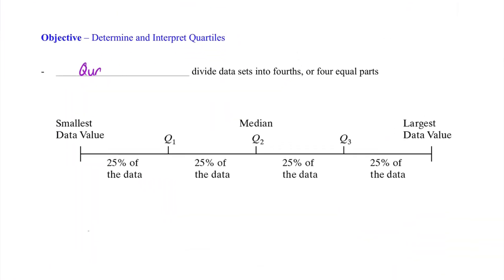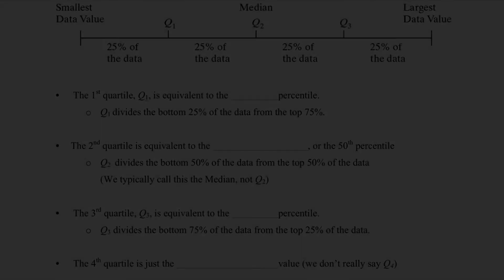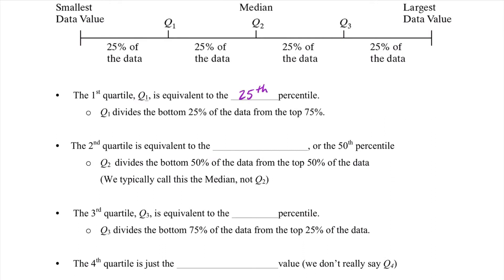Continuing to our next objective, we have a discussion of quartiles, which divide data sets into fourths or four equal parts. As shown in the figure, we have the smallest data value, the median, and the largest data value, with Q1, Q2, and Q3. The first quartile, Q1, is equivalent to the 25th percentile, dividing the bottom 25% of the data from the top 75%. The second quartile is equivalent to the median, splitting all data into bottom and top 50%. The third quartile, Q3, is equivalent to the 75th percentile, with 75% of data below and 25% above. The fourth quartile is just the maximum value. Note we don't usually say Q4 or Q2 — we call those the maximum and the median.